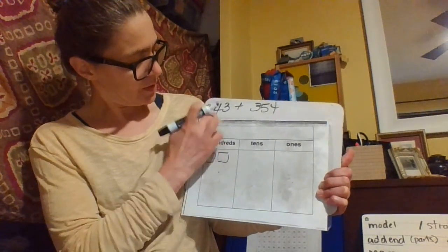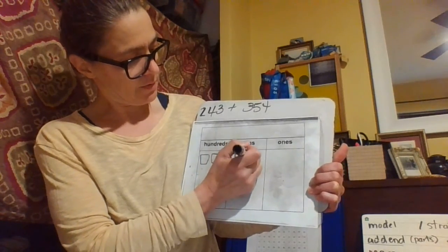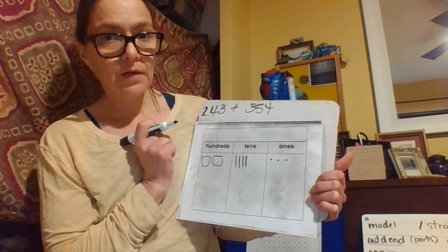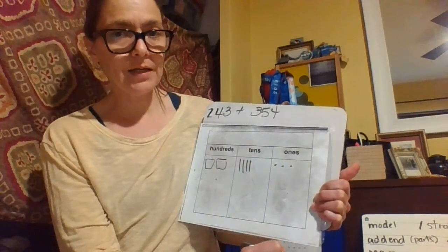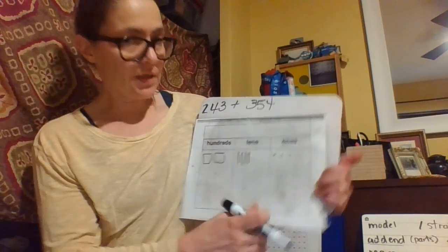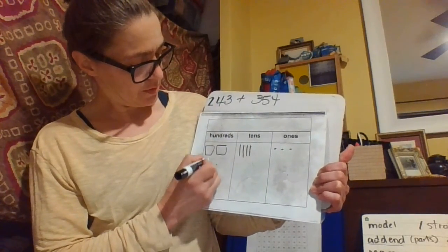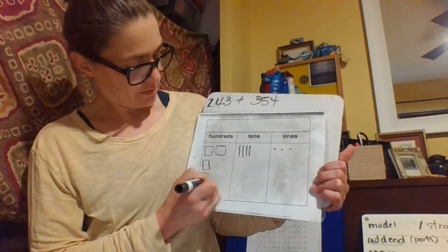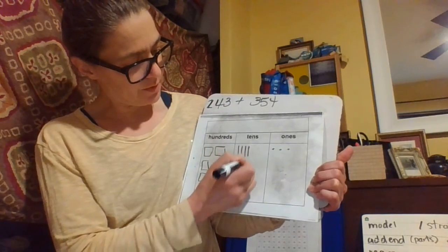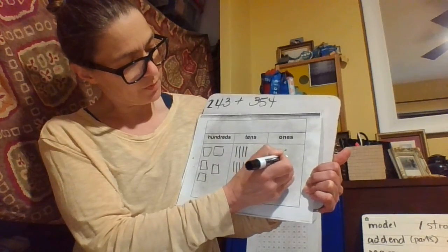100, 200 and then the tens. 10, 20, 30, 40 and then the ones. 1, 2, 3. And then we're making it bigger. We're adding another addend. The second part is 300 and 50. 10, 20, 30, 40, 50 and then 4. 1, 2, 3, 4.